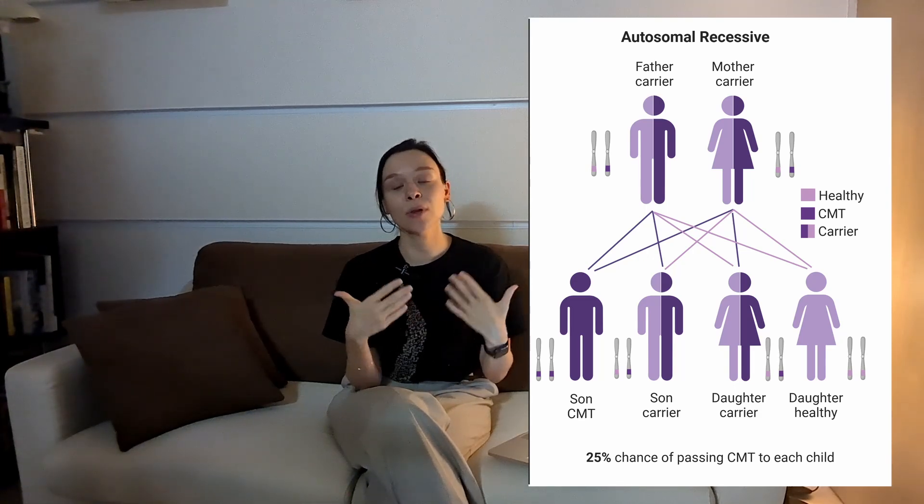So, this is autosomal recessive inheritance — autosomal because the gene is located on an autosomal chromosome, not a sex chromosome, and recessive meaning that we need two copies of the faulty gene for symptoms to occur. These types of CMT are rarer, but oftentimes they are more severe than autosomal dominant types. It only makes sense to talk about carriers in the context of autosomal recessive types of CMT, not in the majority of CMT cases, which are autosomal dominant.